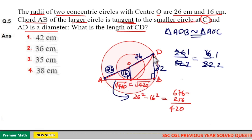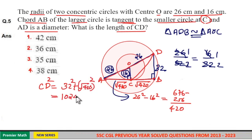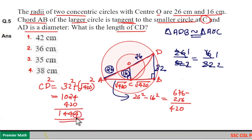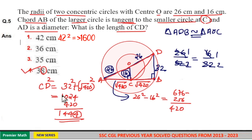Then we can find CD. That is, CD square is equal to 32 square plus root 420 square, which is equal to 32 square is 1024, and root 420 square is 420, which is 1444. That is, 4 is unit digit here. If you square 8, 8 is 64, so 4 is unit digit. So option 4 is your answer. 42 is way larger, so option 4 is your answer.